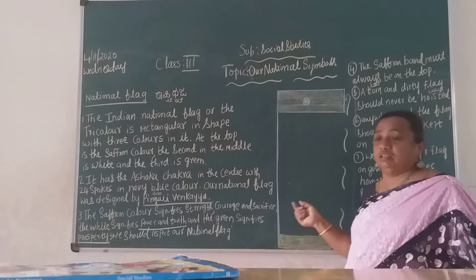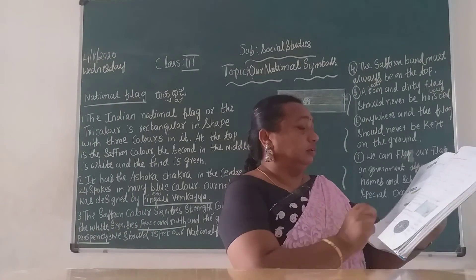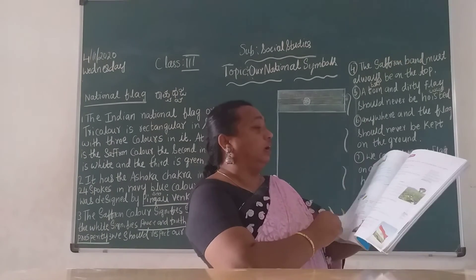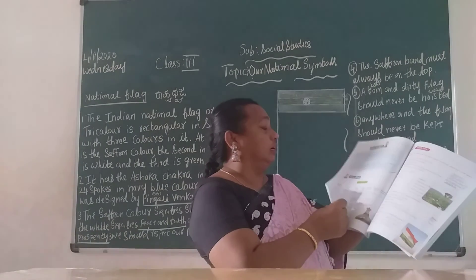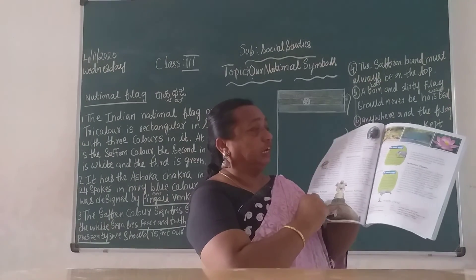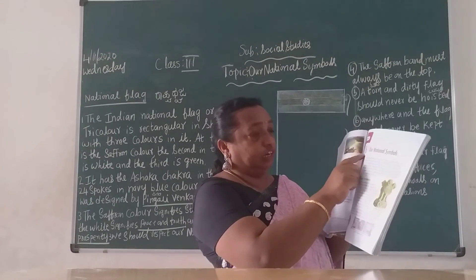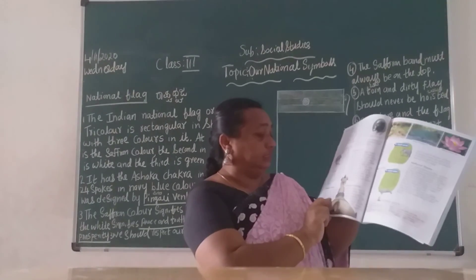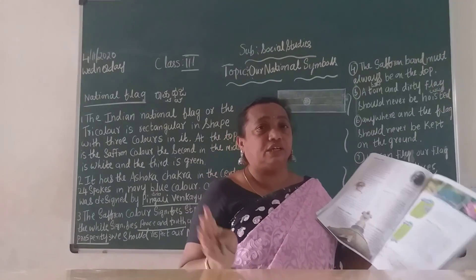Okay children, you have to take out your reader and read the lesson. Last class we learned about the national emblem, and today we learned about the national flag. Read lesson number 6 on national emblem and national flag. Also read about the national anthem and national song. See you next time, bye.